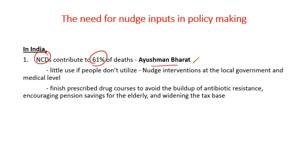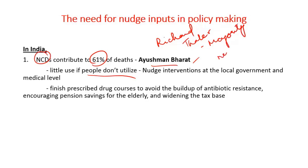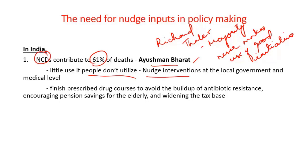Economist Richard Thaler, who received the Nobel Prize, says that the majority of people never make use of good initiatives. He advocates for social persuasion in order to make people utilize good initiatives. Nudge interventions at the local government and local medical unit level are imperative to make use of government initiatives.